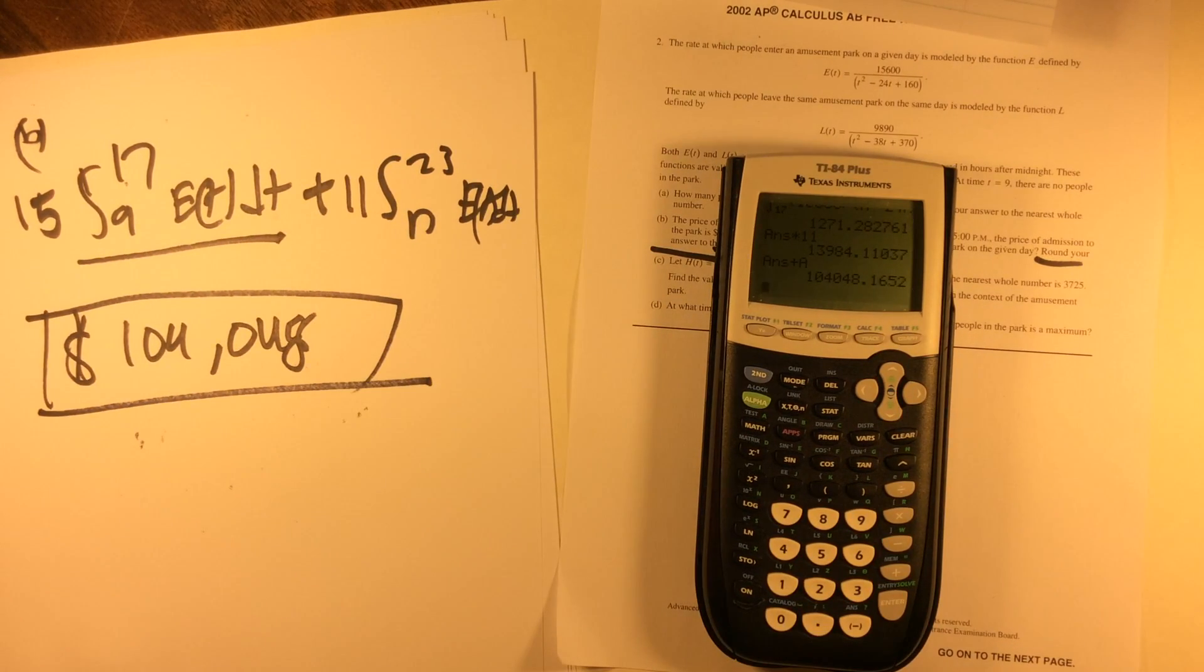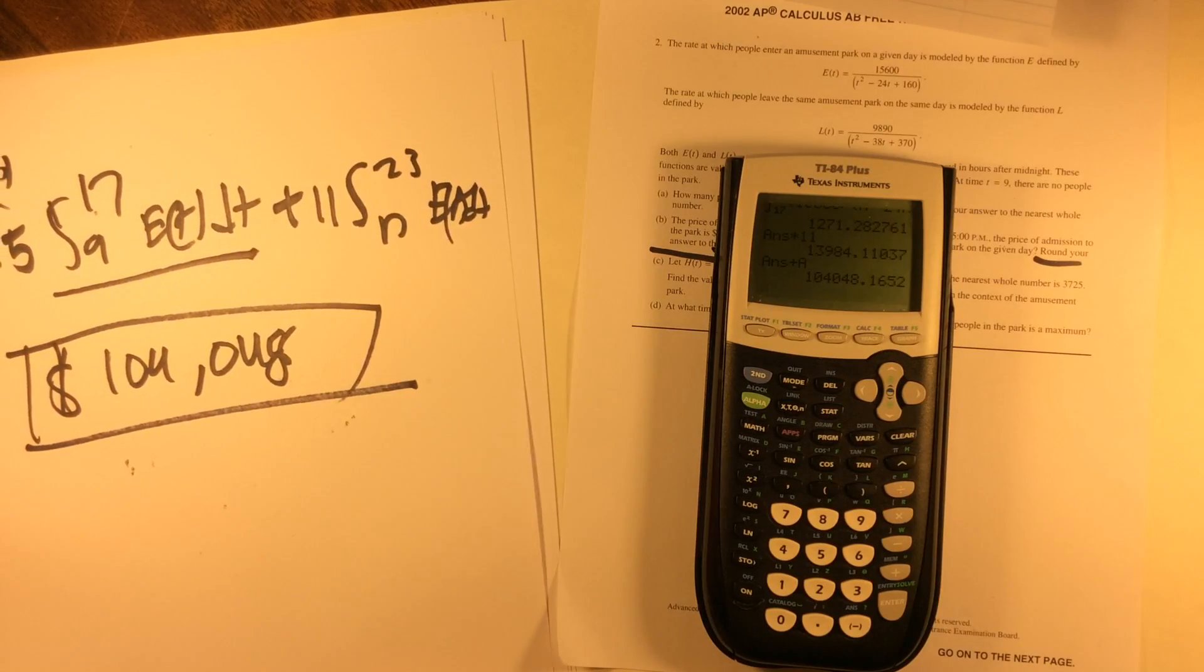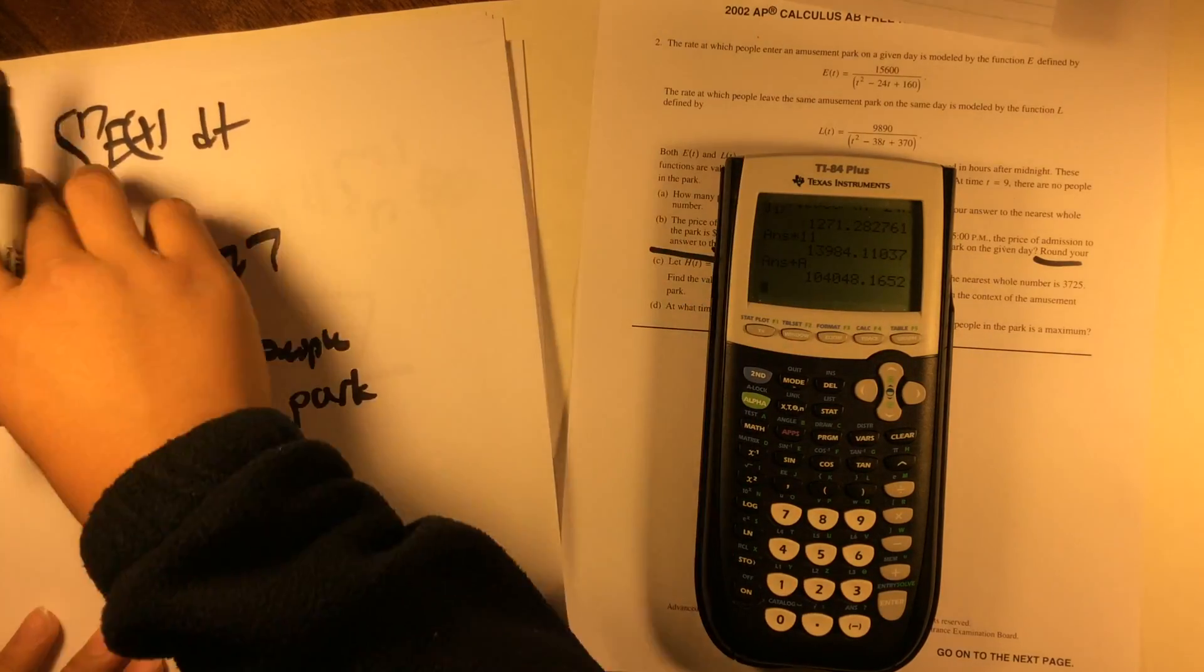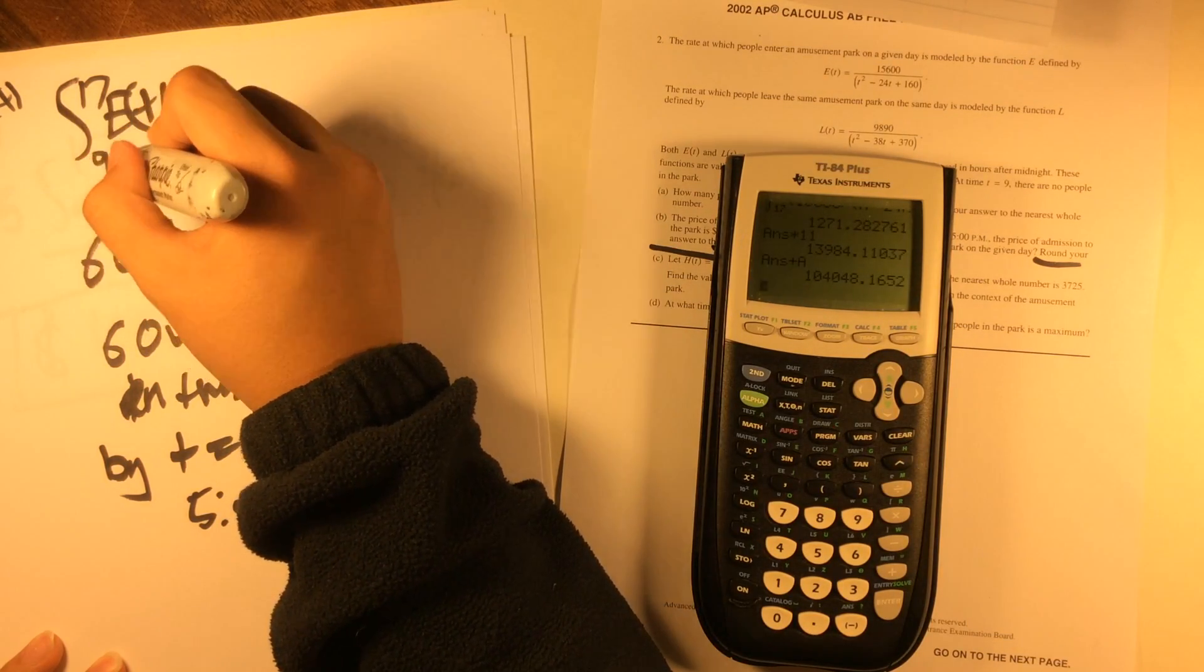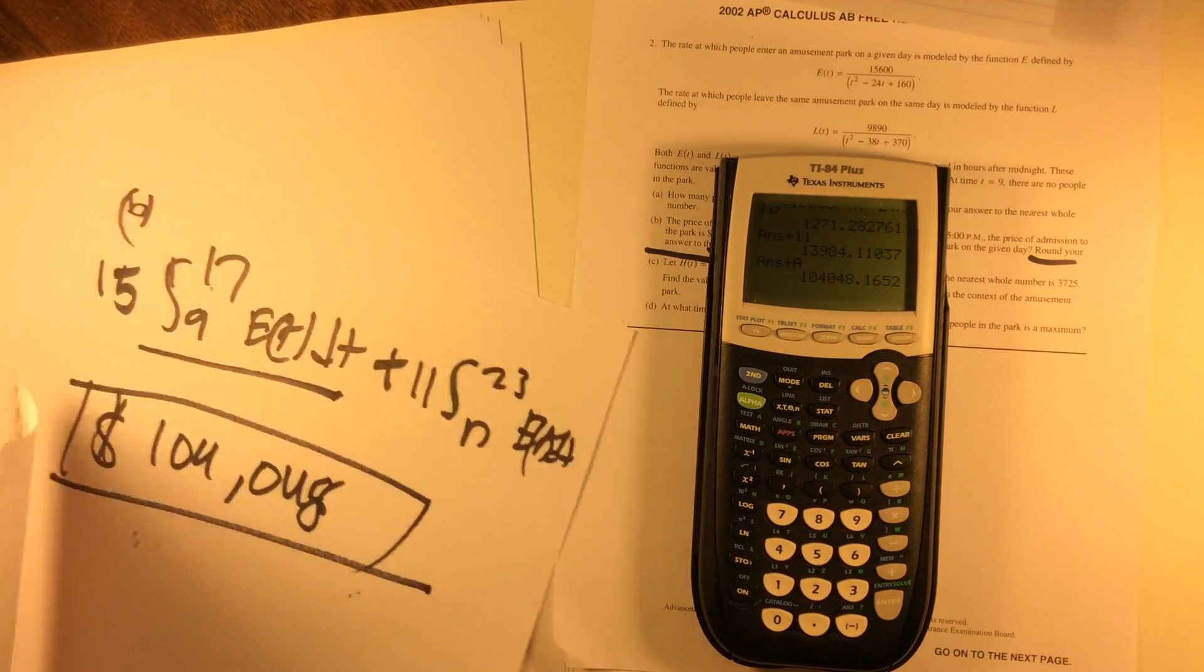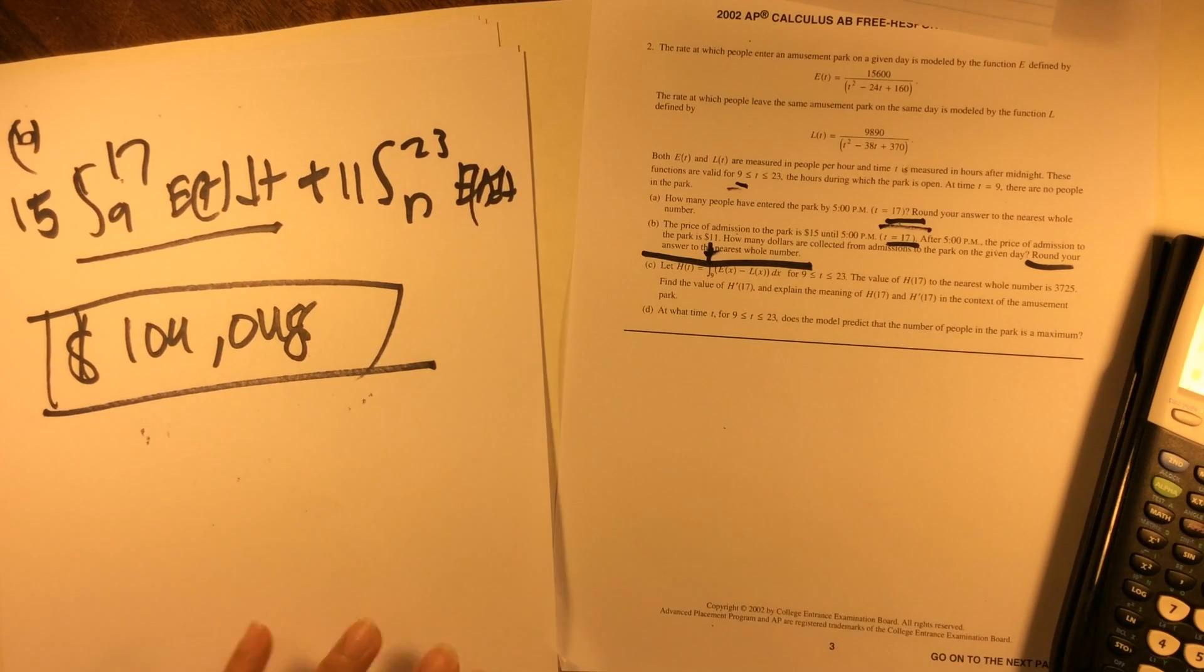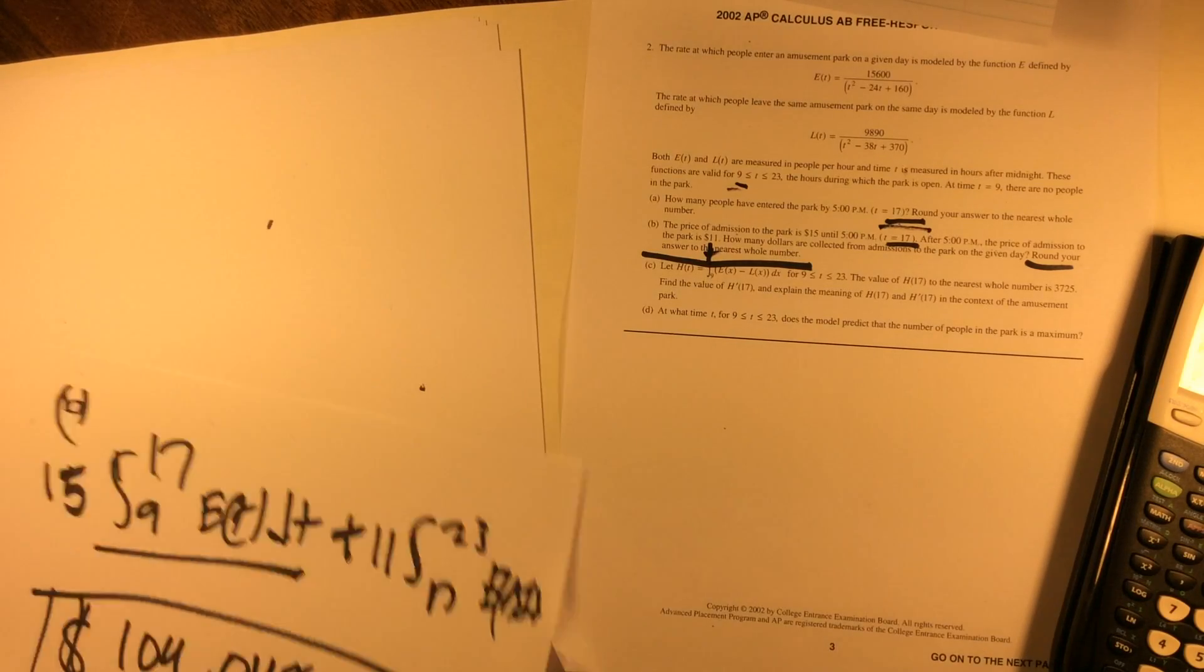For this question, you would have earned the points for the setup only, which is actually surprisingly less points than you would have earned for A, where you earned one point for the integrands, one point for the limits, and one point for the answer. For number B, there's nothing really challenging about it, pretty straightforward, just know the limits and that's pretty much it.